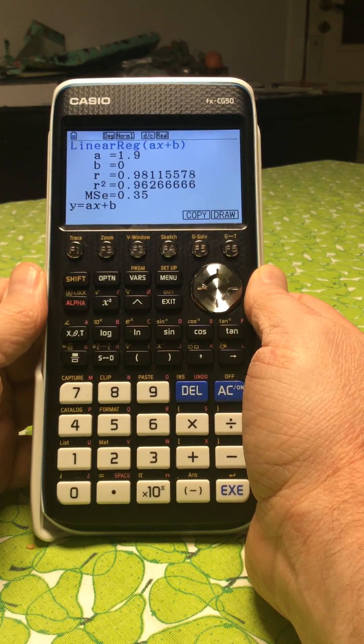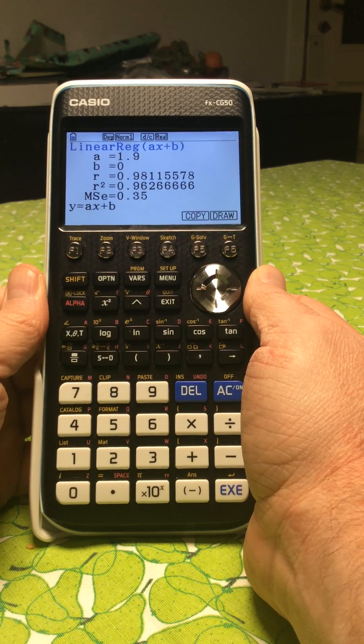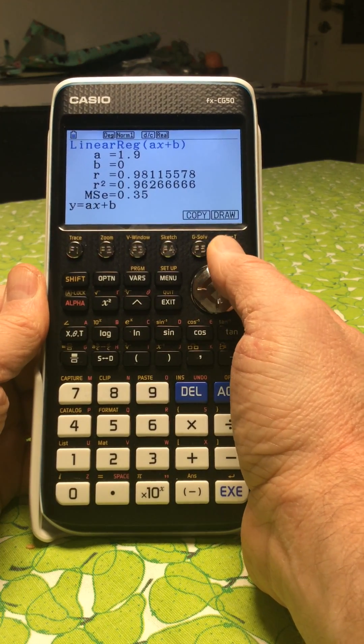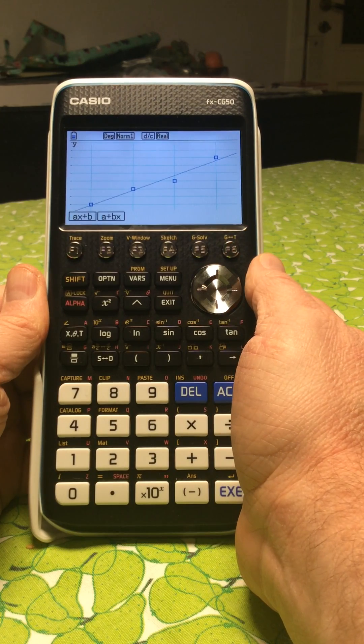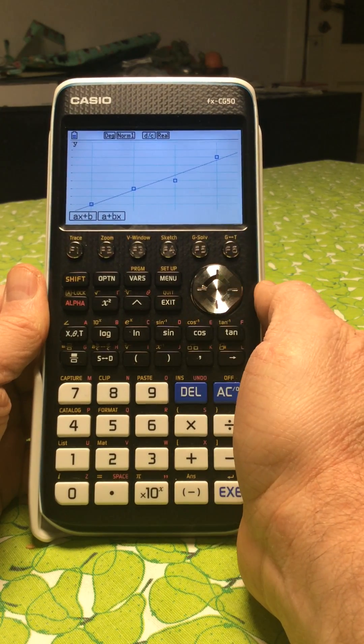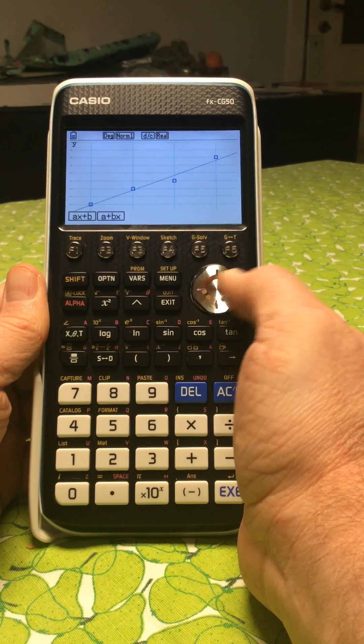We can draw this by pressing draw, and we see that this correlation is very good. In addition, we can get this out as a function. We can go back, go to calc again, x, and then